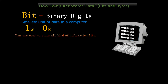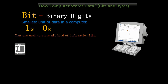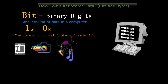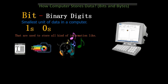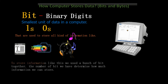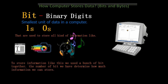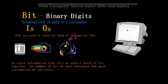From the text that appears on your screen, to the color of an image, to the sound that comes out of your headphones. To store information like this, we use a bunch of bits together. The number of bits we have determines how much information we can store.